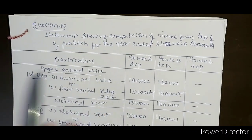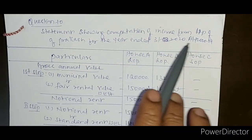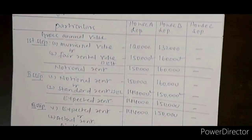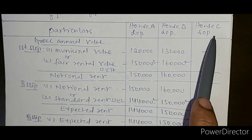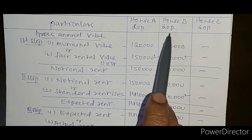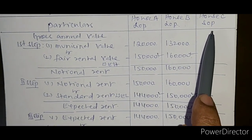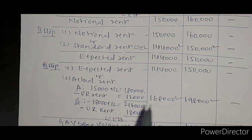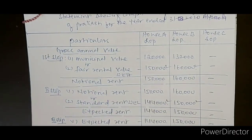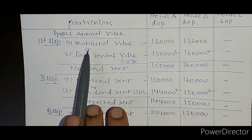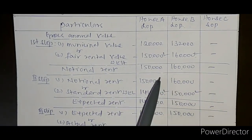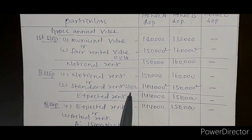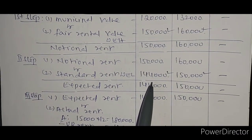The next problem in the same 2018 paper: statement showing computation of income from house property of Mr. Prakash for Assessment Year 2020-21. Here there are multiple house properties — House A, House B, and House C. House A and B are let-out properties, House C is a self-occupied property. Step 1: municipal value or fair rental value, whichever is higher.